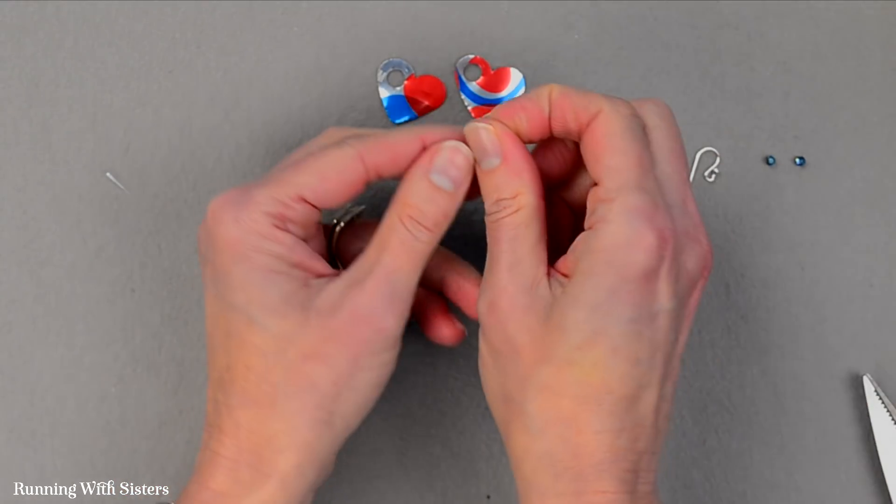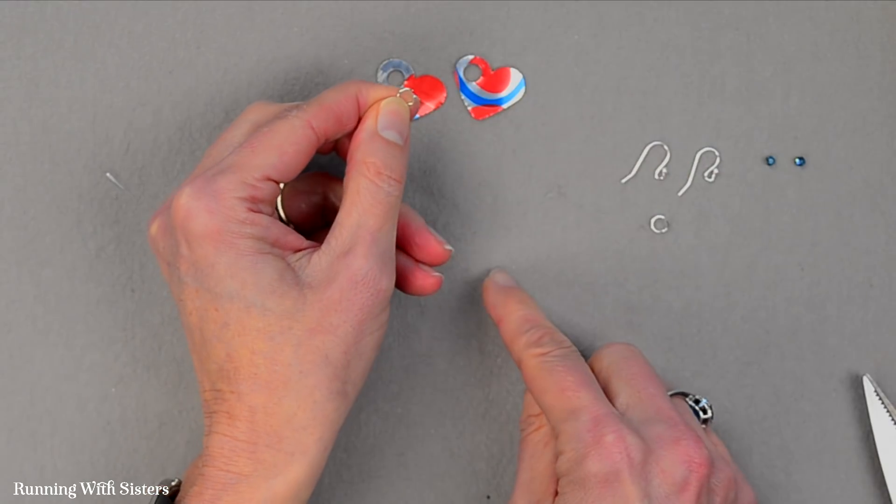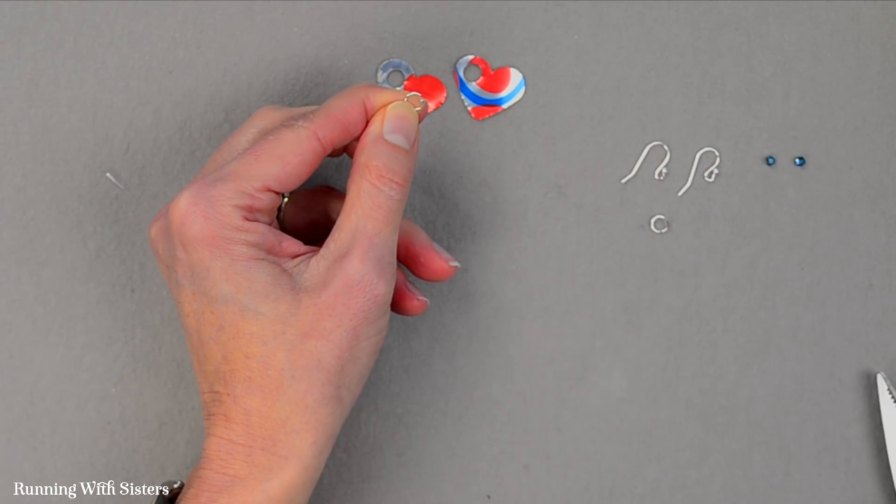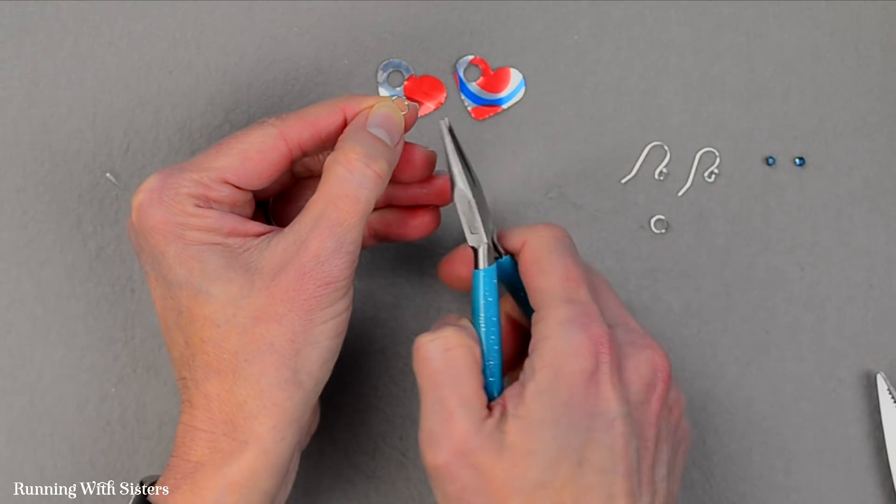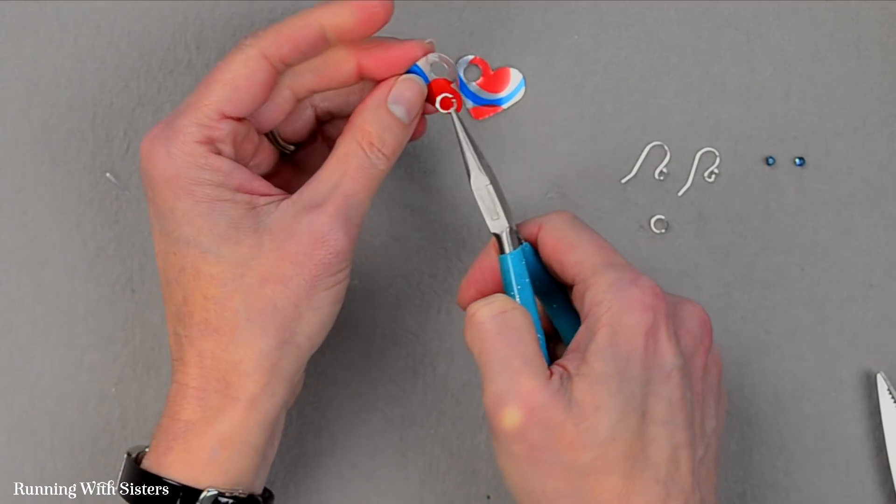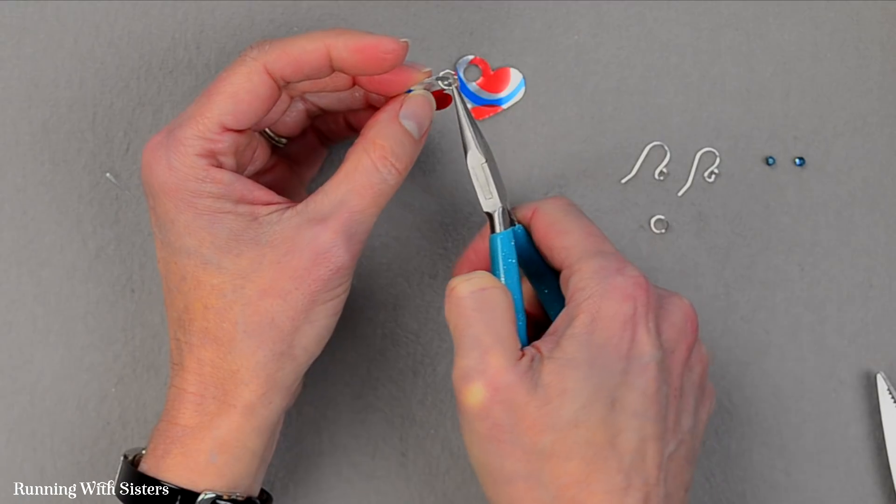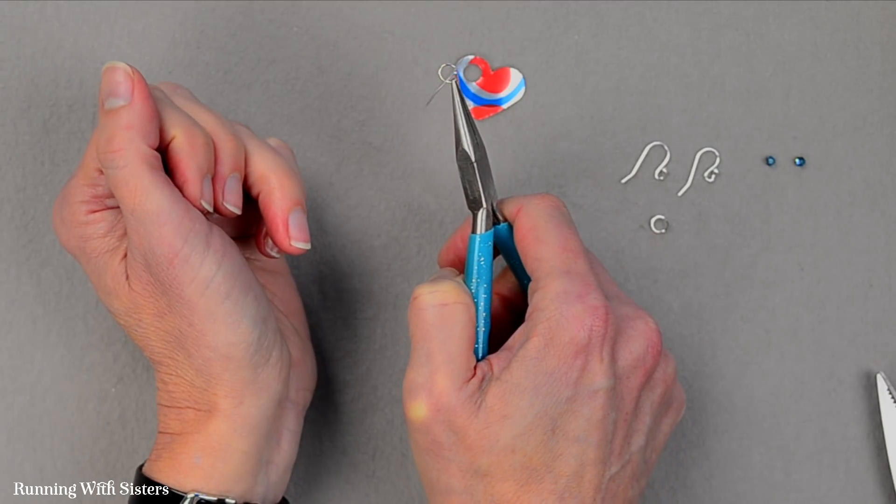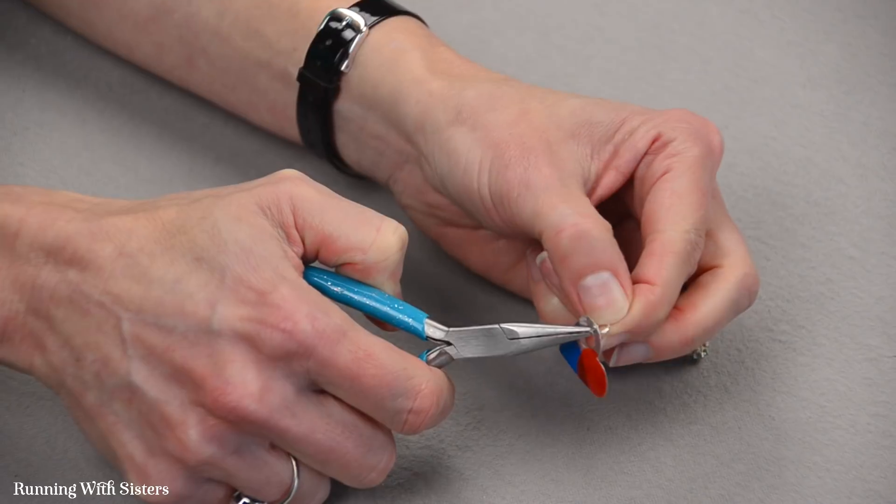And to do that I'm going to take a jump ring. And I've got kind of a large jump ring. And I'm going to hold it with some chain nose pliers just because it makes it a little bit easier to handle. And I'm going to feed that the little hole that I just made through my jump ring.